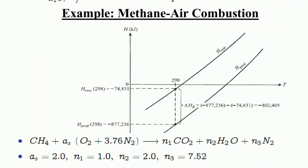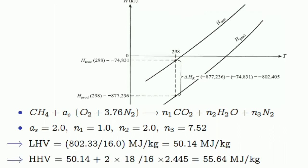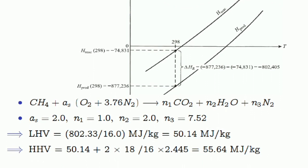Methane plus αs times oxygen plus 3.72 nitrogen yields products: n₁ carbon dioxide plus n₂ water plus n₃ nitrogen. Given data: αs = 2.0, n₁ = 1.0, n₂ = 2.0, and n₃ = 7.52.